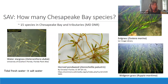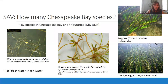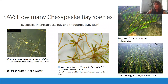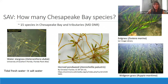How many species of SAV are there in Chesapeake Bay? Roughly 15, and of course that depends on how you define the Bay. Just within the Bay and its main tributaries in the tidal portion, roughly 15 species — ranging from tidal freshwater species like water star grass, to brackish species like horn pond weed and widgeon grass, to full-salinity species like eel grass near the mouth in Virginia. SAV grows in lakes, ponds, rivers, and ditches — most places where there's water.